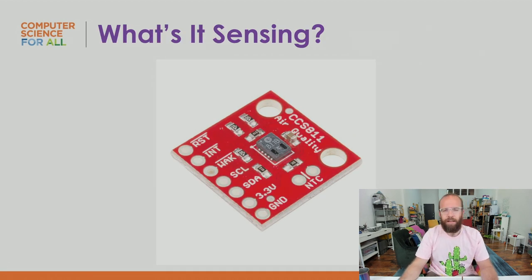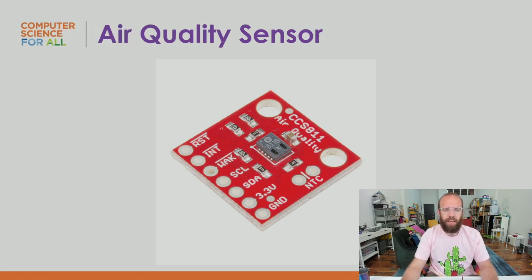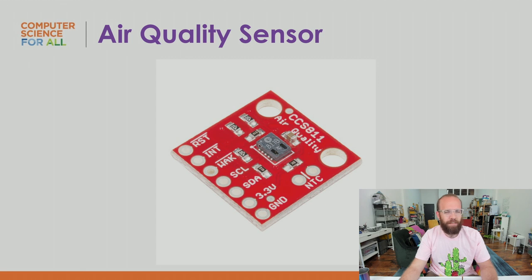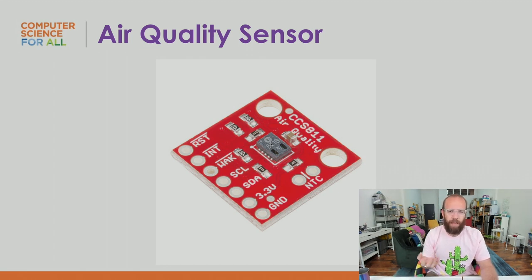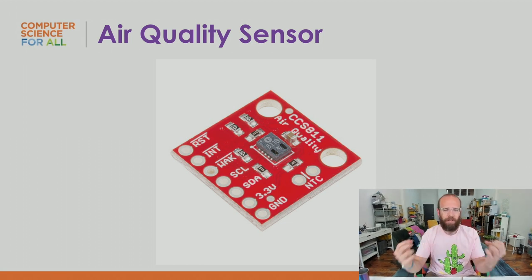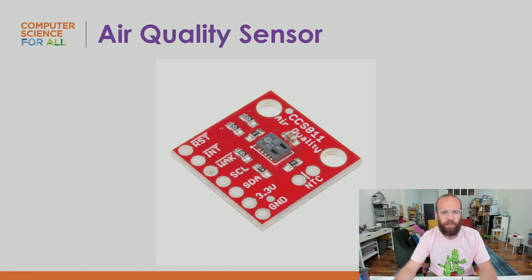This next sensor is sensing air quality. It picks up chemicals and particulates in the air — that little black box in the middle has a small cavity where chemicals can fall into it, so it's picking up those chemicals. Air quality sensors typically have some sort of cavity that pulls the air in so it can capture it and measure the chemicals.